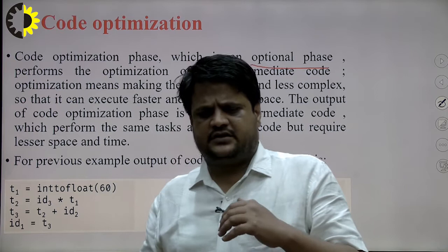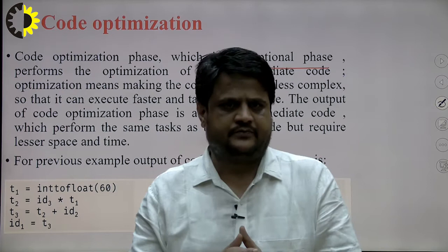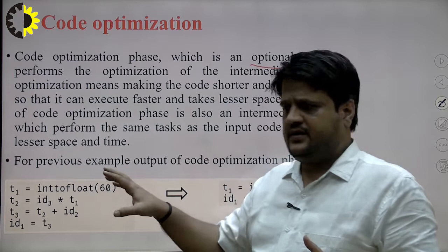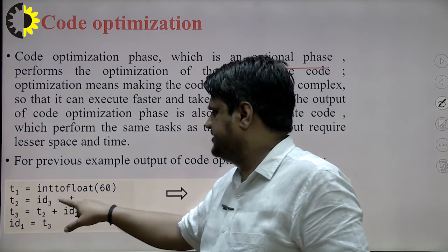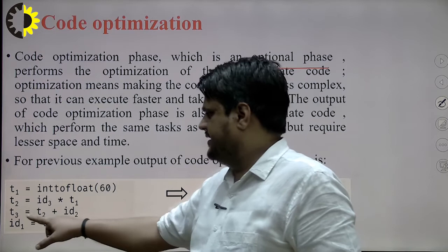If the code optimization phase is not present, there is no impact on the output of the program. For the previous example, the code optimization result is as follows. Starting from intermediate code: T1 = intToFloat(60), T2 = ID3 * T1, T3 = ID2 + T2, ID1 = T3. Whenever we perform optimization, suppose this particular conversion happens at compile time — the compiler converts integer 60 to the float value 60.0.